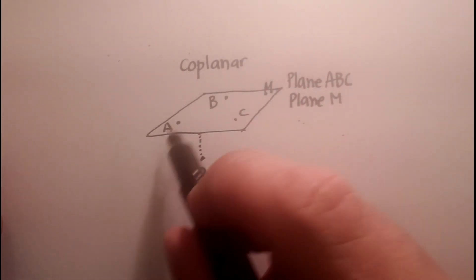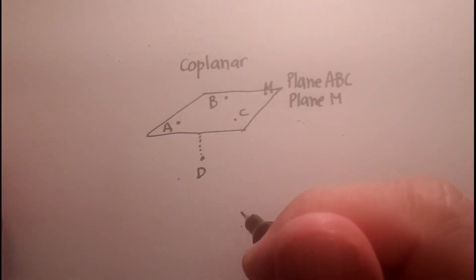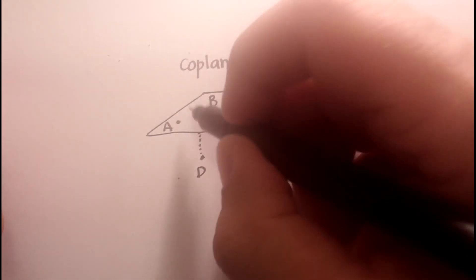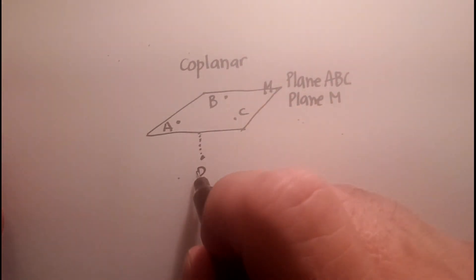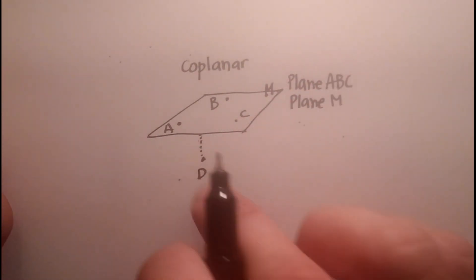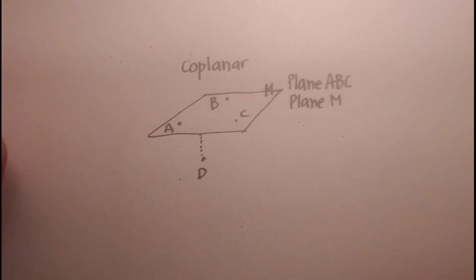So that these are not coplanar. You could make them coplanar by having to draw like another plane and include one or two of these other points. But right now the concept is that it's just coplanar or not coplanar.